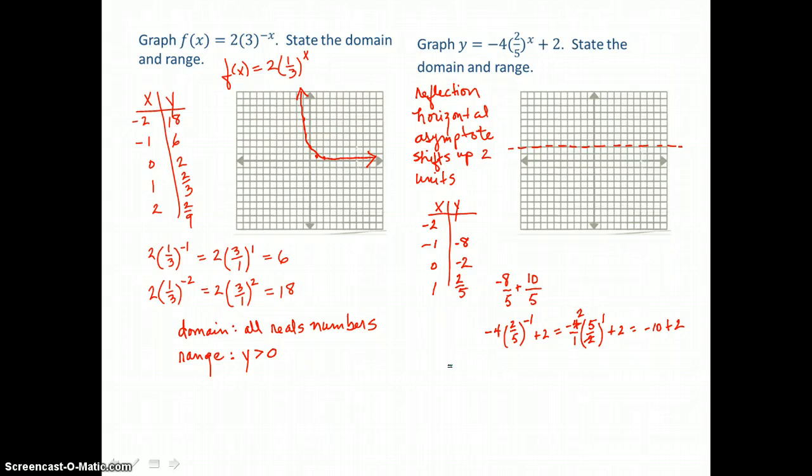And now I'll let x equal negative 2. So I have negative 4 times 2 fifths raised to the negative 2 power this time, plus 2. So I'll get rid of that negative exponent.